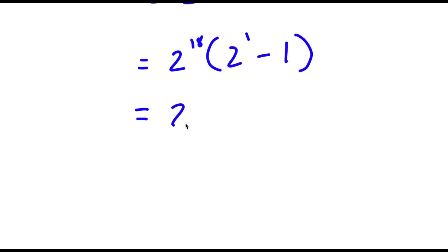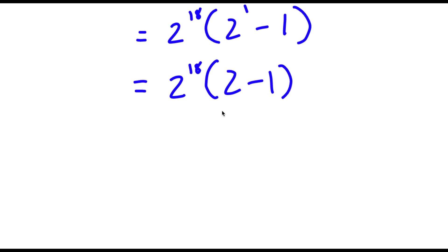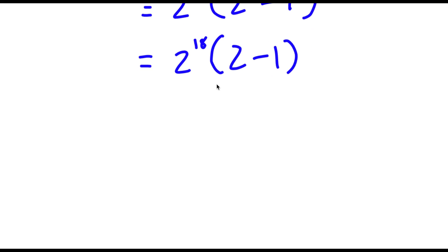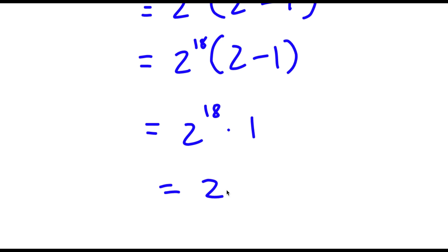Now I have 2 to the power of 18 times — 2 to the power of 1 is the same thing as 2 — so I have 2 minus 1. Now 2 minus 1 is simply equal to 1, so now I have 2 to the power of 18 times 1, which is simply equal to 2 to the power of 18.